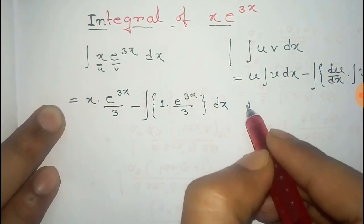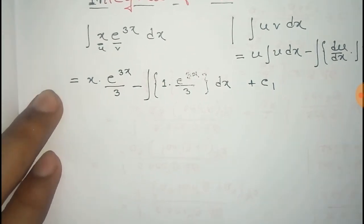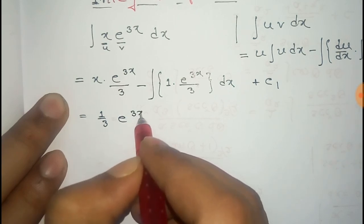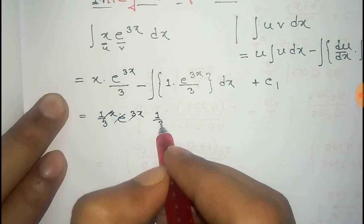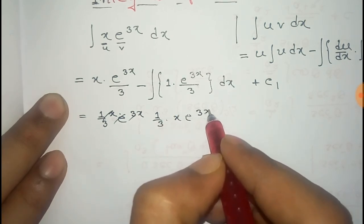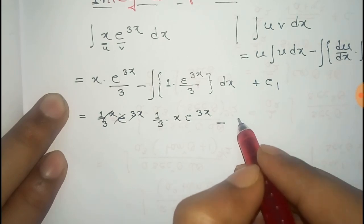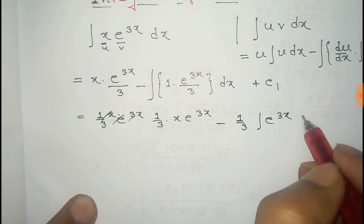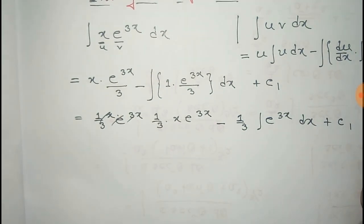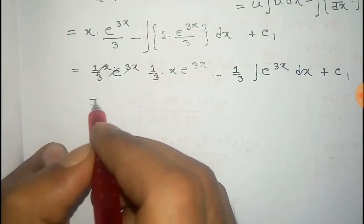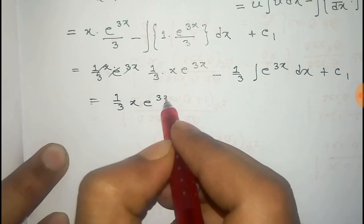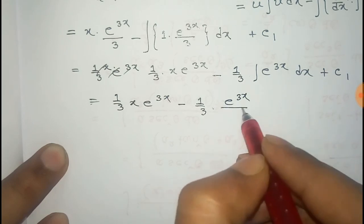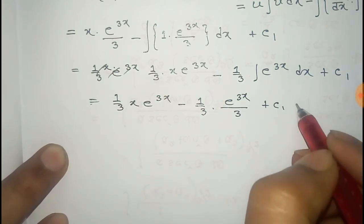Integrating dx gives a constant c1. This simplifies to (1/3)·x·e^(3x) minus the integral of e^(3x) dx. The integral of e^(3x) is e^(3x)/3, so we get (1/3)·x·e^(3x) minus e^(3x)/3, plus constants c1 and a new constant c2.